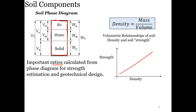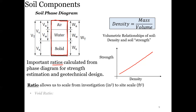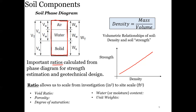There are important ratios calculated from the phase diagram for strength estimation in geotechnical design. We'll be quantifying the behavior of soil and eventually using those values to estimate design strength, then checking if the soil can support the loading from a structure above it. These ratios include void ratio, porosity, degree of saturation, water or moisture content, unit weights, and specific gravities. You'll see a lot of overlap between aggregates and soils here — these are all simple ratios that are super critical for design calculations.